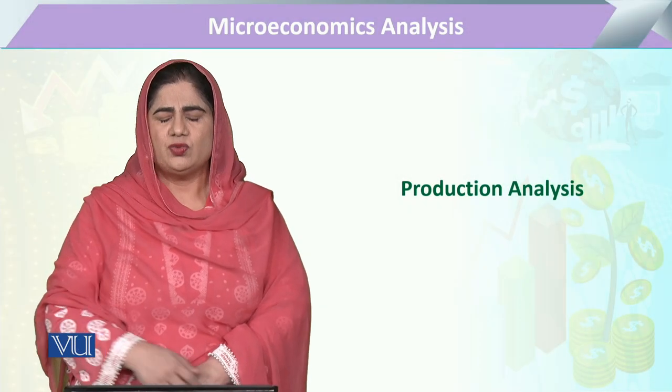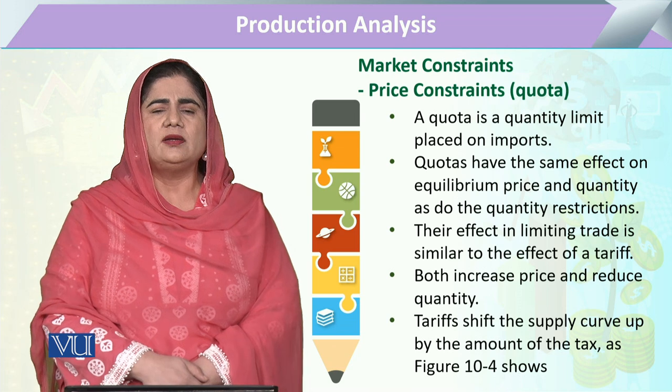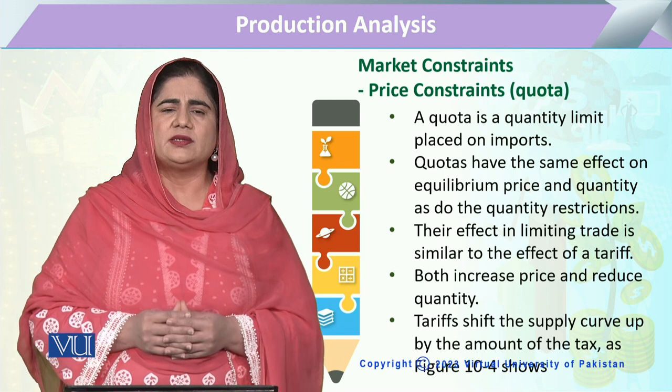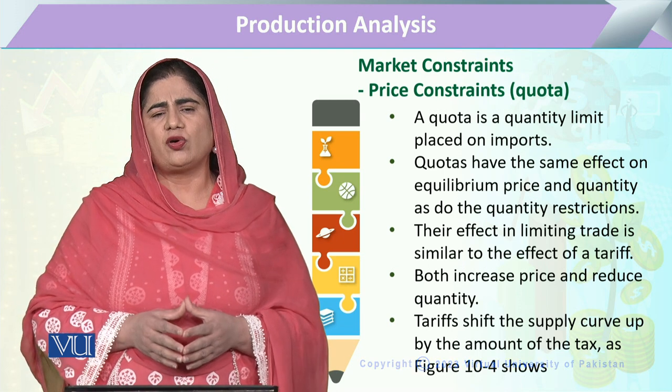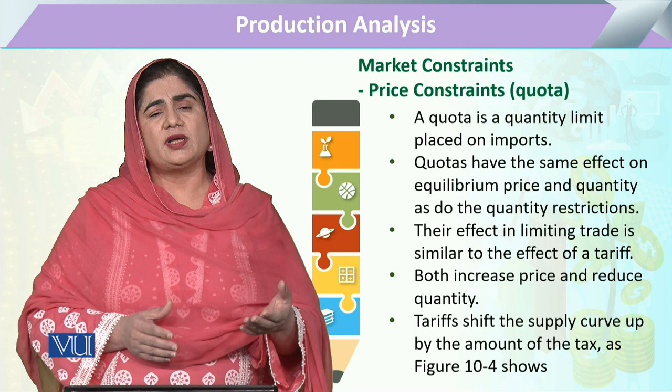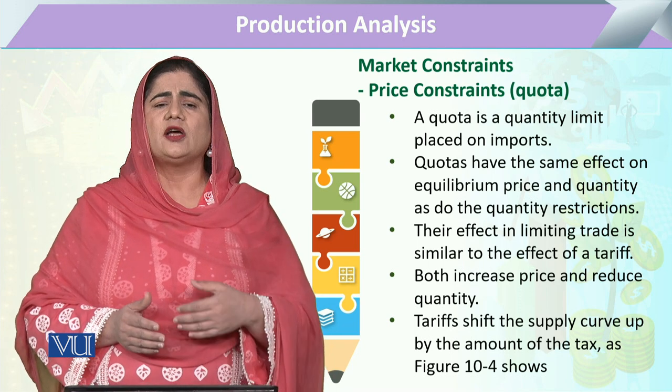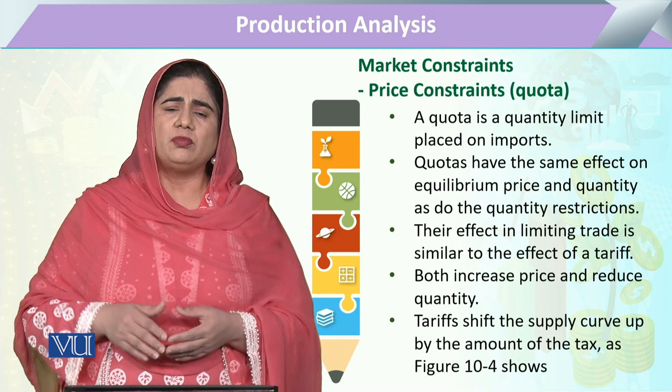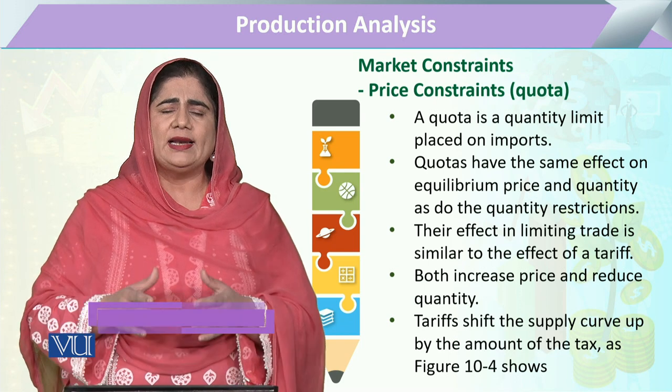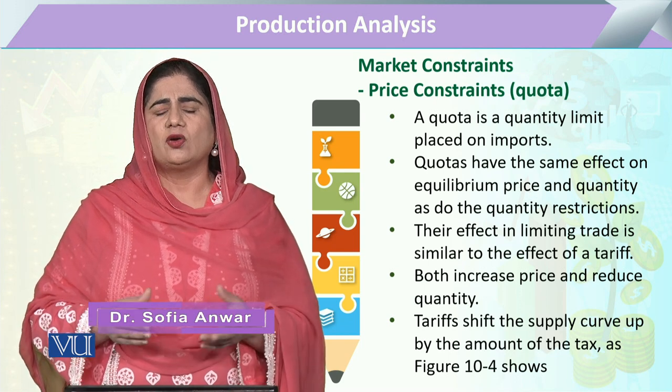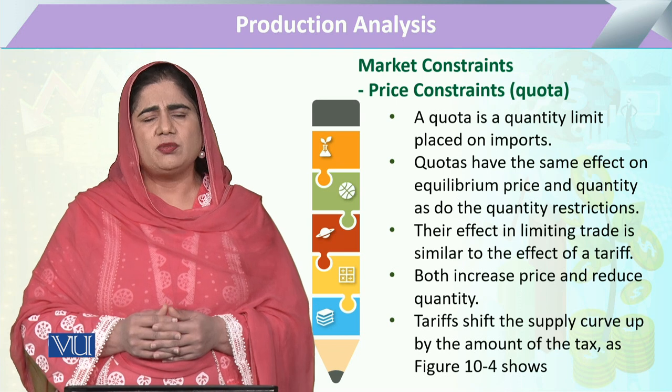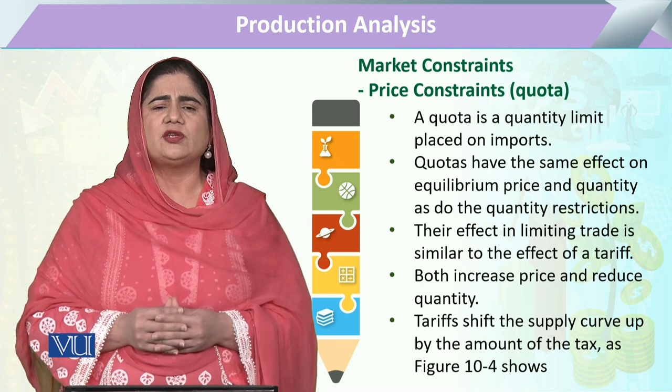In production analysis we are going to study price constraints, and this price constraint is quota. Quota is generally termed as a restriction on the amount of quantity. We can say that we cannot sell, consume, or produce whenever we add a limit to an amount or quantity. That will be called a quota. If we look here, this limit of quantity is mostly about imports, but naturally we are going to start with imports.